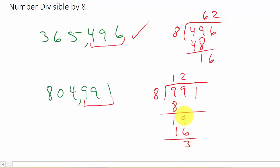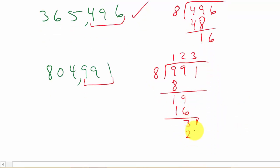That's 9 minus 6 is 3. Bring down the 1. 8 goes into 31 three times. That's going to be 3 times 8 is 24. So we have a remainder of 7.